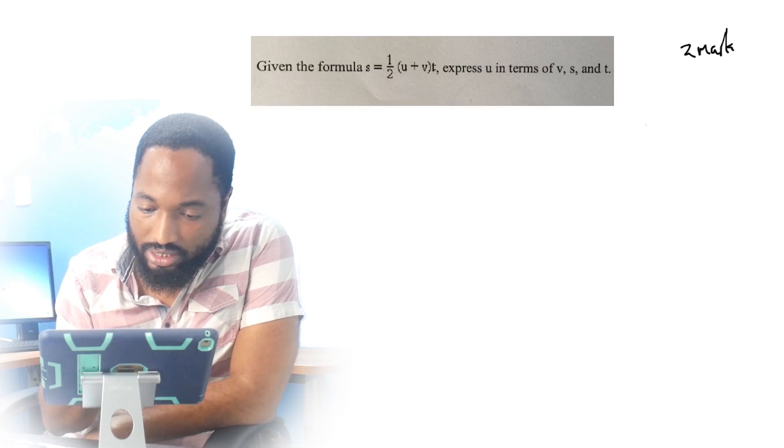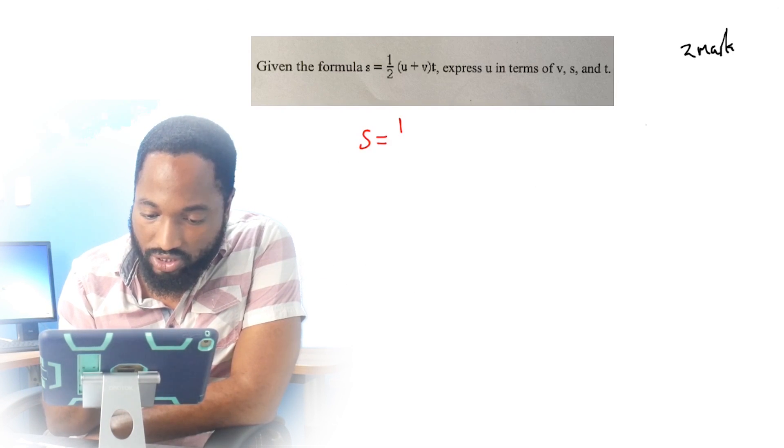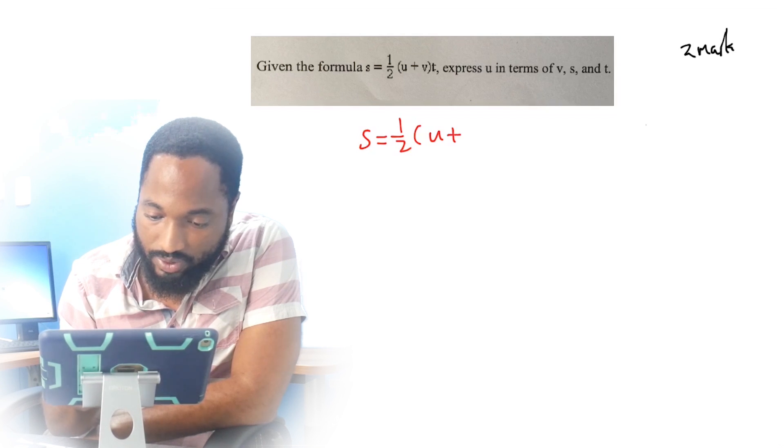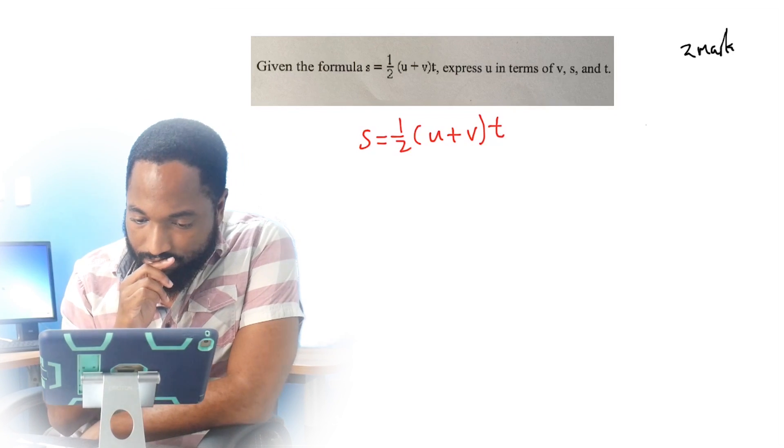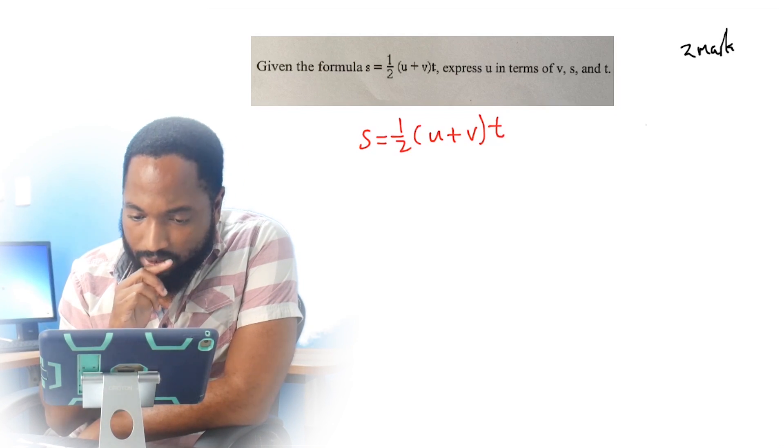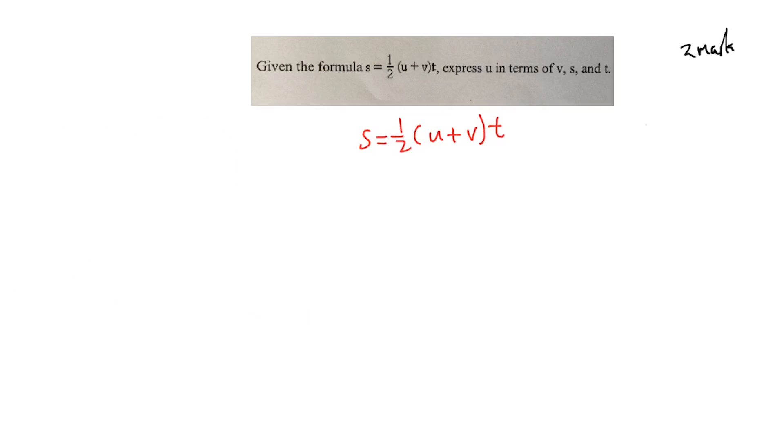Given the formula S is equal to 1/2(U plus V)T. Now, they're asking to make U the subject of the formula here. This is where practice will come in because you could do this: you could expand here, multiply everything by a half, and then multiply everything by T. But that is a little bit of trouble.